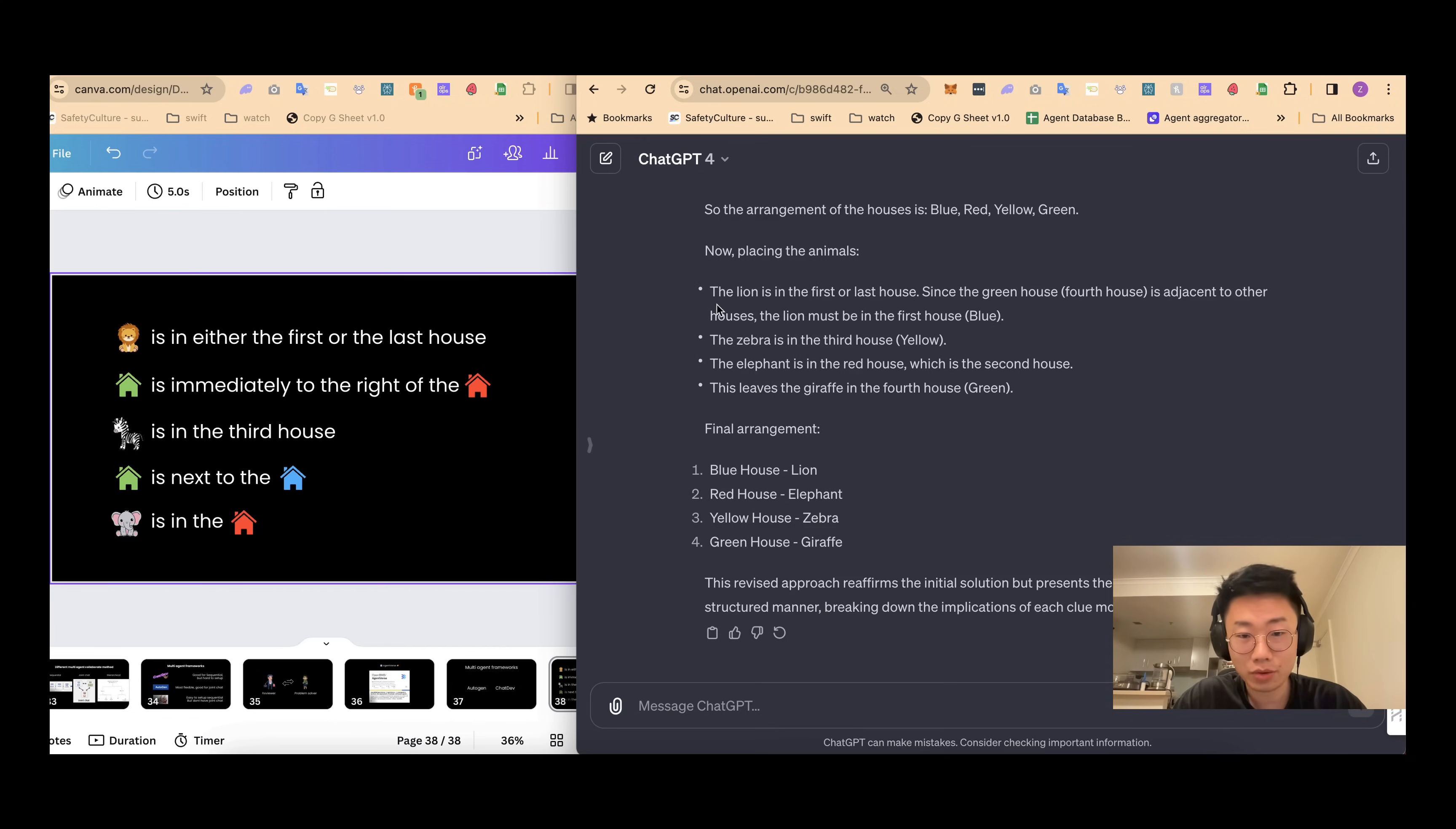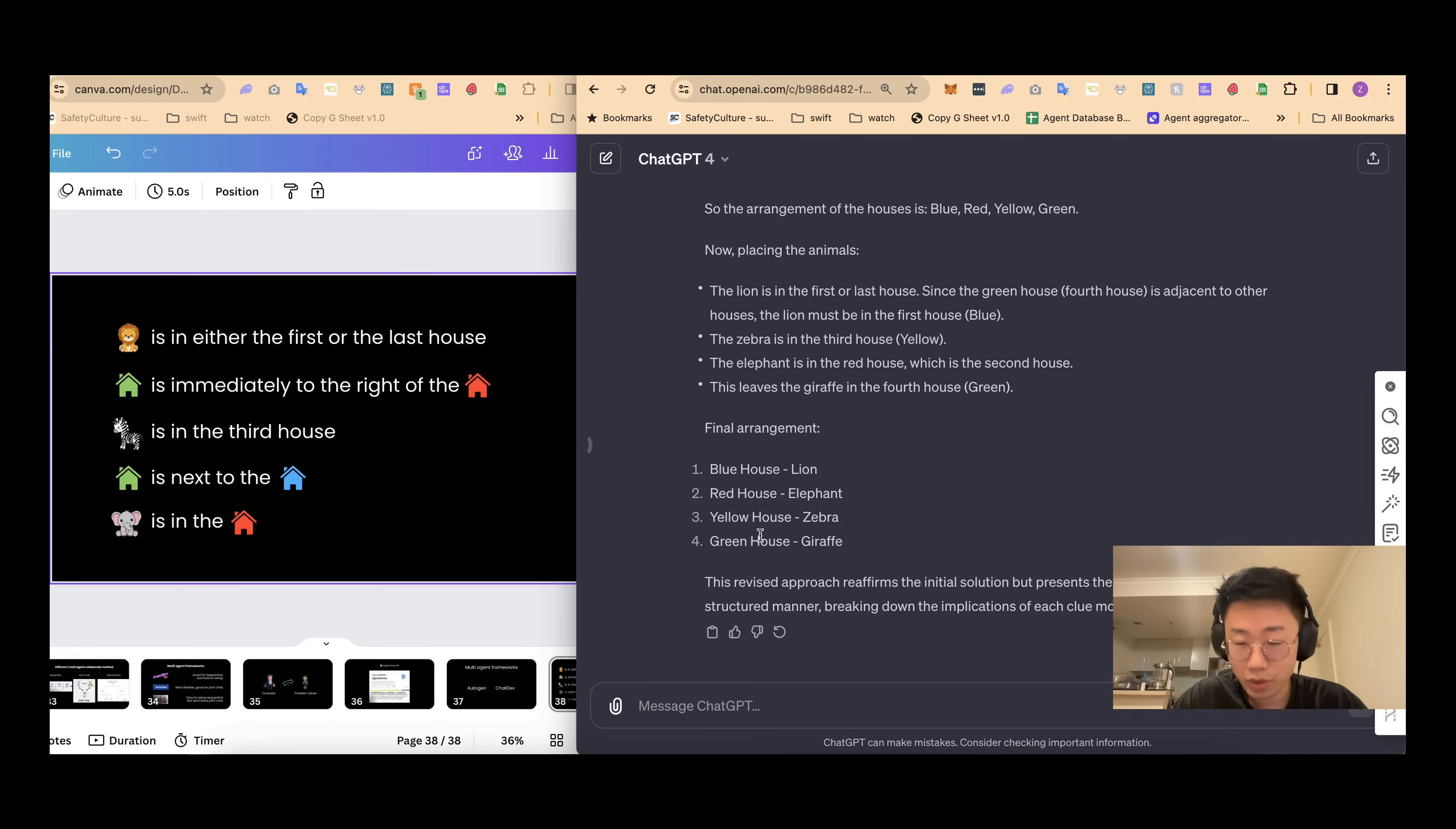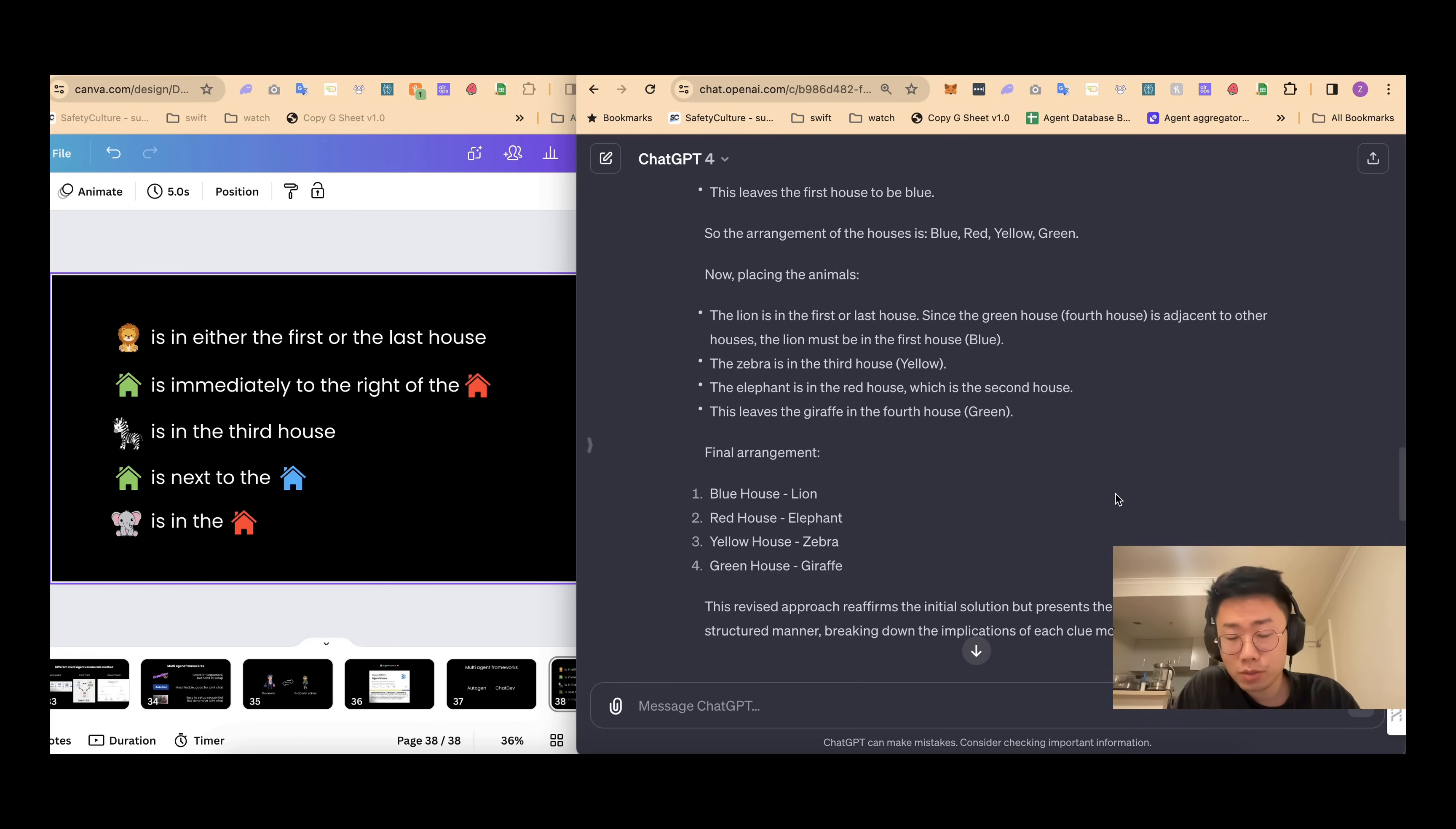So what happened now is you can see that GPT-4 goes through another thinking process, but the weird thing is it said that this revised approach reaffirmed the initial solution, but presented the reasoning in a slightly more structured manner. So this is actually surprising that it didn't even spot the issue that the green house is not immediately to the right of the red house. I think this showcased that it is actually pretty hard for large language models to self-reflect and improve the answer for those complicated cases. And this is where the multi-agent system is useful.